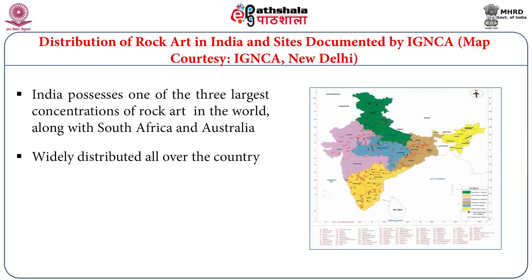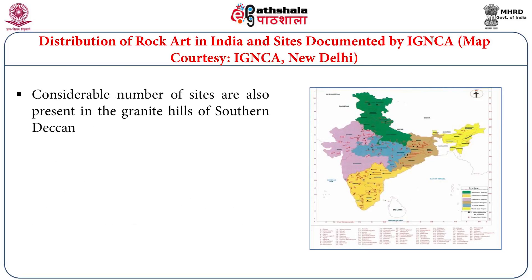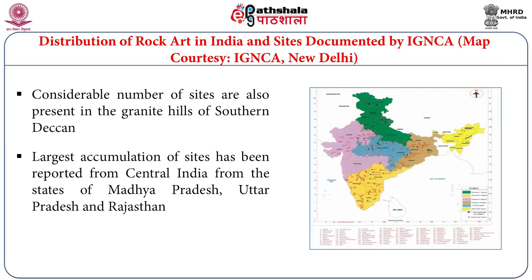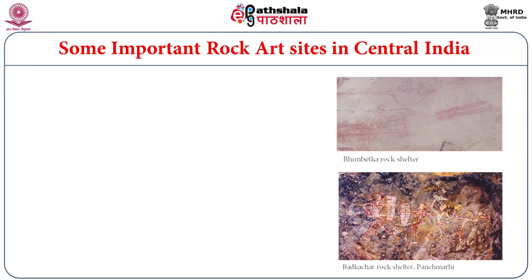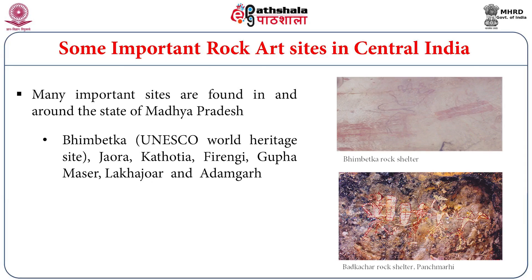Indian rock art remains are found all over the country, primarily in the Vindhya, Satpura, and Aravalli hills of central India. There are also many sites in the southern part of India, mainly in the Deccan region. The largest accumulation of sites is found in central India from the states of Madhya Pradesh, Uttar Pradesh, and Rajasthan. In this map, you can see the distribution of rock art sites across India. Many of the important sites are found especially in the state of Madhya Pradesh. We should mention the site of Bhimbetka, which is the most important rock art site in India, declared by UNESCO as a World Heritage Site, with rock art dating from prehistoric times to the medieval period.